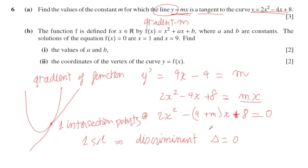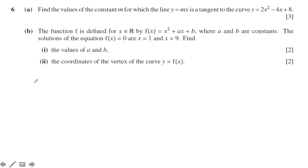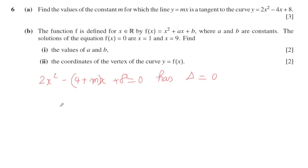Delta equals zero means b squared minus 4ac equals zero. So remember this condition. We have the function 2x squared minus 4 plus m times x plus h equals zero, with only one solution, so set delta equal to zero: b squared minus 4ac. The value for b is (minus 4 plus m), and when squared the negative becomes positive. So we have (4 plus m) squared minus 4 times 2 times c equals zero, and we find m from this equation.